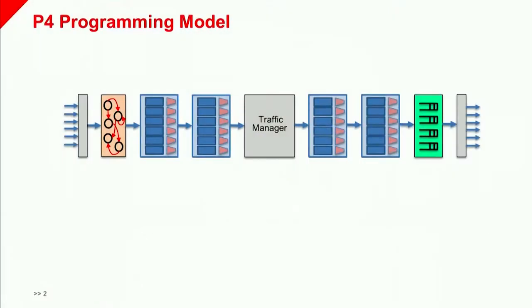How do we implement line rate packet processing? We use this PISA architecture, which is a feed-forward pipeline of stages where each stage contains some memory and some compute local to each stage, so each stage can operate independently. This allows us to process packets at line rate and provides nice deterministic throughput and latency guarantees. This is really the architecture that P4 programs are meant to be compiled onto.